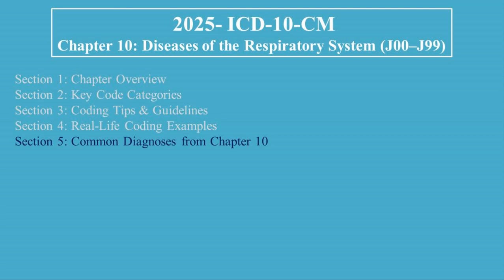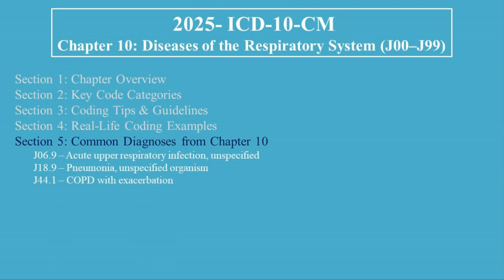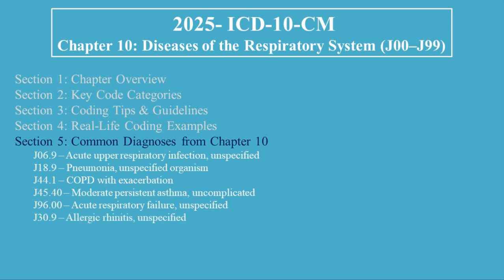Section 5: Common Diagnoses from Chapter 10. Here are some of the most commonly used codes: J06.9, Acute Upper Respiratory Infection, Unspecified; J18.9, Pneumonia, Unspecified Organism; J44.1, COPD with Exacerbation; J45.40, Moderate Persistent Asthma, Uncomplicated; J96.00, Acute Respiratory Failure, Unspecified; J30.9, Allergic Rhinitis, Unspecified; and J84.10, Pulmonary Fibrosis, Unspecified.